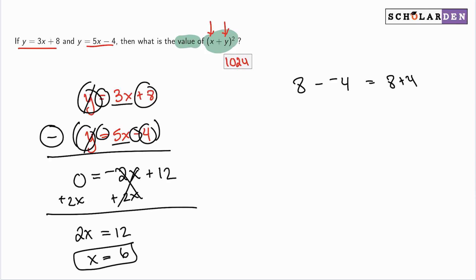Next, we'll plug in the x into either equation. We can pick either one. I'll just make my life easier. Pick this one. So we have y equals 3 multiplied by 6 plus 8. 3 by 6 is 18 plus 8 is 26.